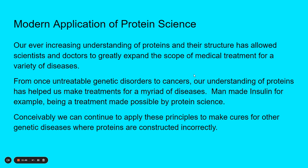Our understanding of proteins has actually given us a lot of different things we're able to do now that we weren't able to do in the past. Knowing about their structure has allowed scientists and doctors to expand the scope of medical treatment for a variety of diseases. So untreatable genetic disorders, cancers — things we weren't really able to do anything about in the past — we're now able to address because we can make proteins on our own. For instance, insulin: if you don't produce enough of it, it causes diabetes, and we now can create our own insulin. Conceivably, we can continue to apply these principles to make cures for other genetic diseases where proteins are constructed incorrectly.